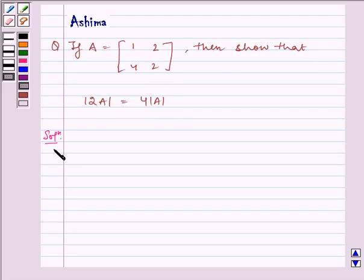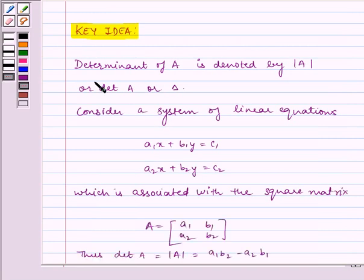Now let us write the solution. Before this, let us see how to find out the determinant. Determinant of A is denoted by |A| or determinant A or delta. Consider the system of linear equations A1X + B1Y = C1 and A2X + B2Y = C2 which is associated with the square matrix A = [[A1, B1], [A2, B2]]. Thus determinant A is equal to |A| = A1B2 - A2B1.